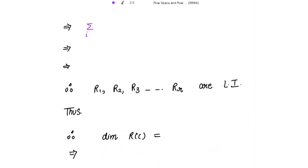This sum from i=1 to R of alpha_i C_{i, L_k} can be written using the Kronecker delta as the sum from i=1 to R of alpha_i delta_{ik} = 0, for k = 1 to R. Since delta_{ik} equals 1 when i equals k and 0 otherwise, the only non-zero term occurs when i equals k.